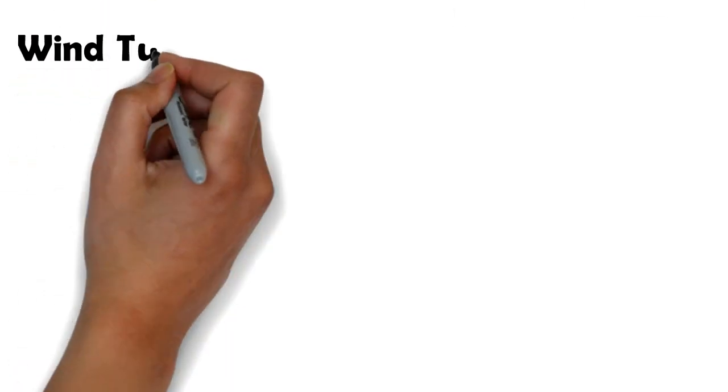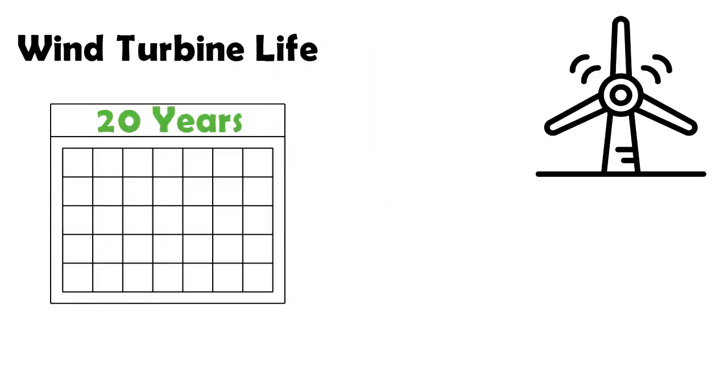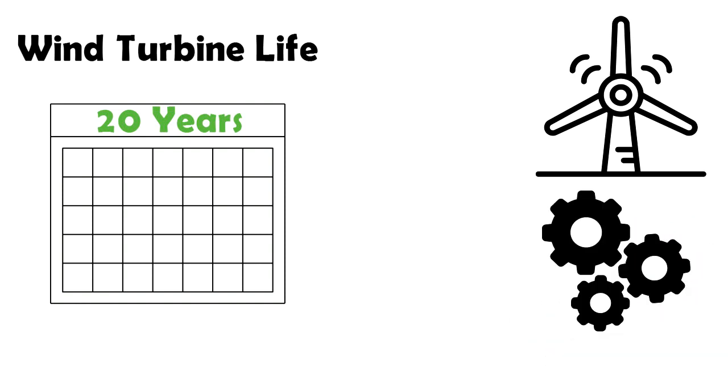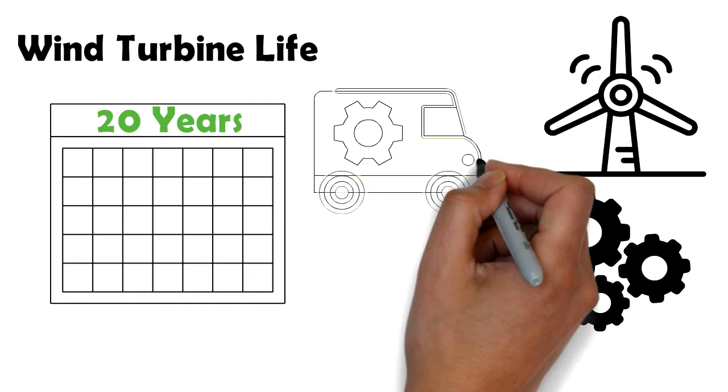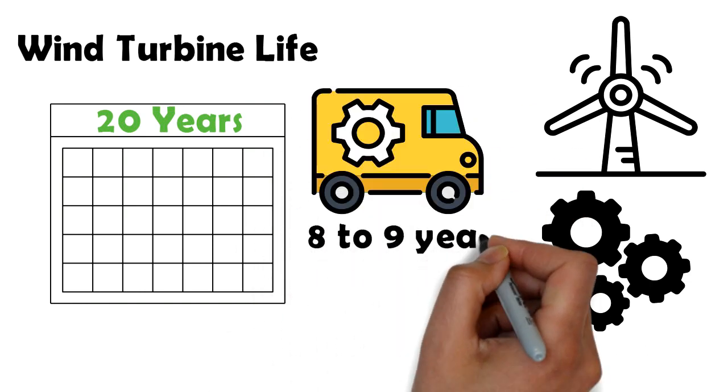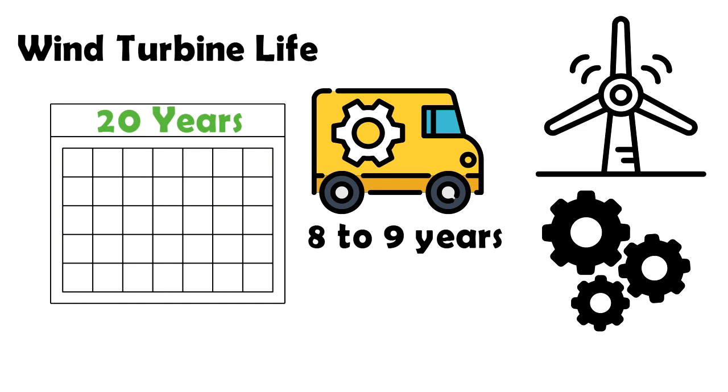Now wind turbines generally have a life of 20 years. The gearbox is replaced or refurbished two to three times in its 20-year lifetime. Experts have observed that in most cases, the gearbox is replaced every eight to nine years. This entirely depends upon whether the winds at the location are turbulent or steady.